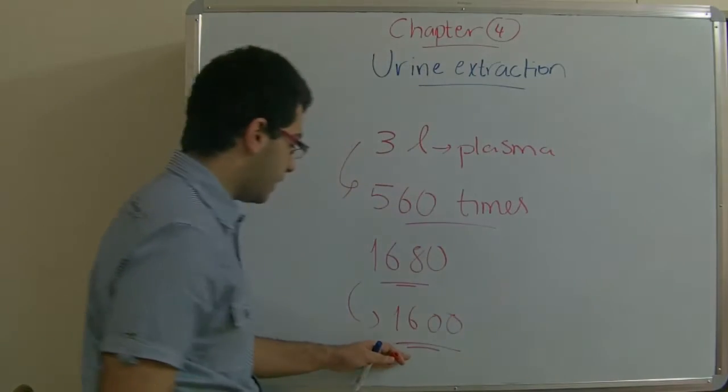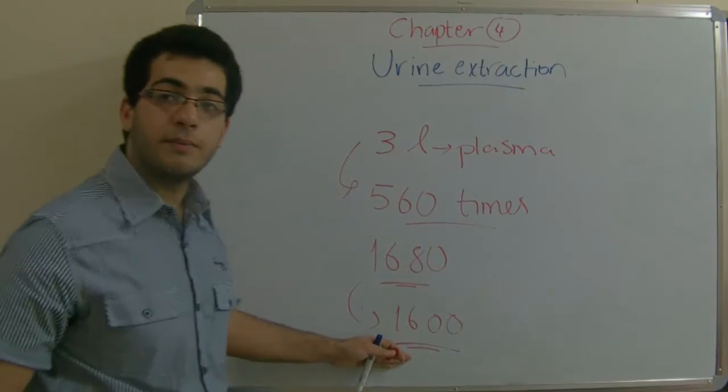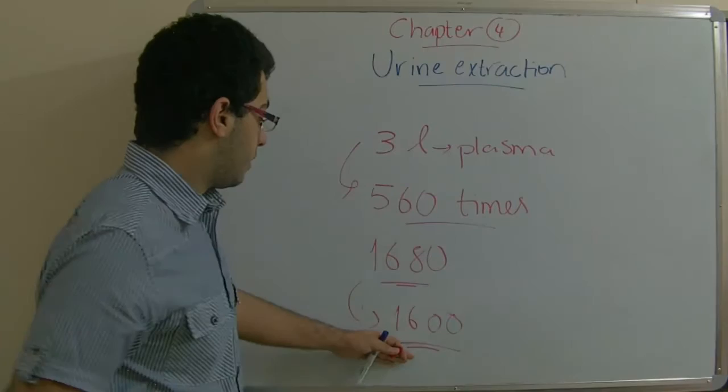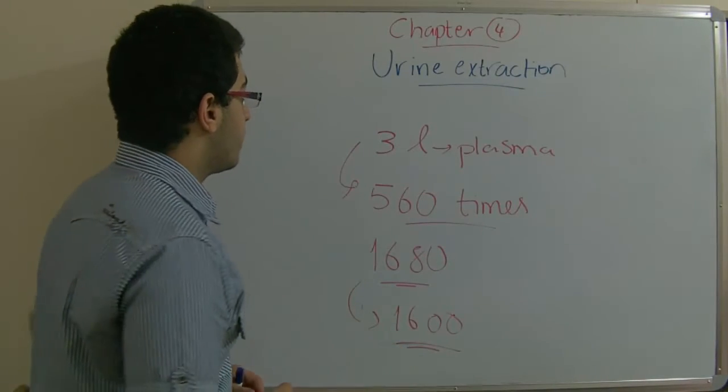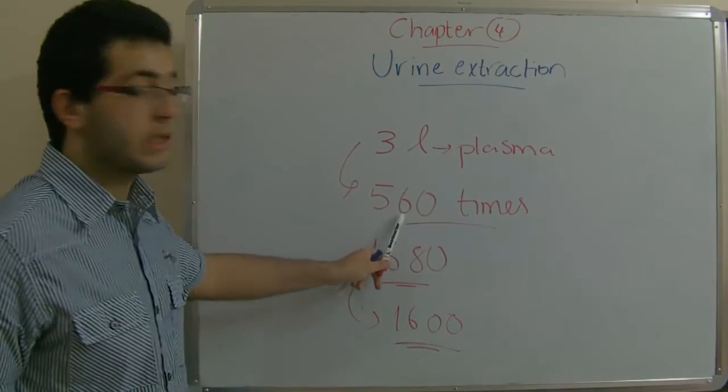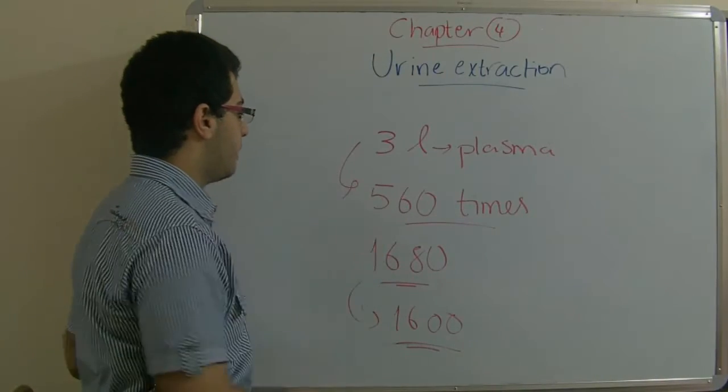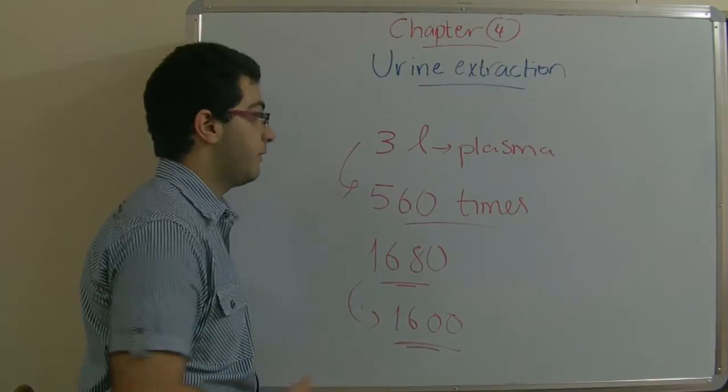So, the total volume of the blood, 1600 liters of the blood pass by the kidney every day. 3 liters of plasma pass 560 times through the kidney in order to be filtered.